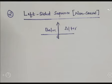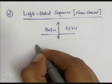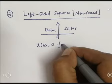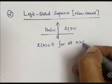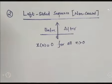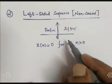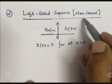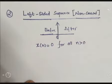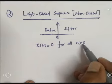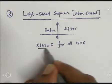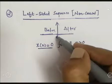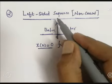A left-side sequence is one for which x[n] is equal to zero for all values of n greater than zero. The sequence is present before zero — that is called a left-side sequence, or we can say a non-causal sequence. After zero, meaning for n greater than or equal to zero, the samples should be zero. The sequence should be present before zero; that is called a left-side sequence.